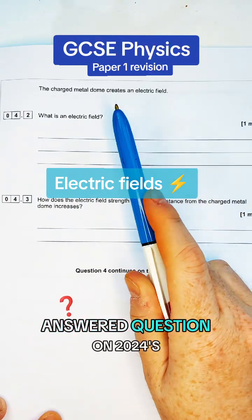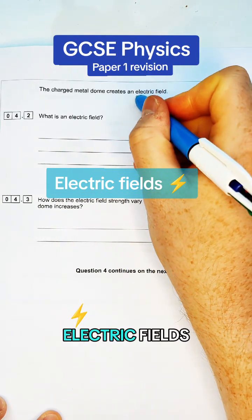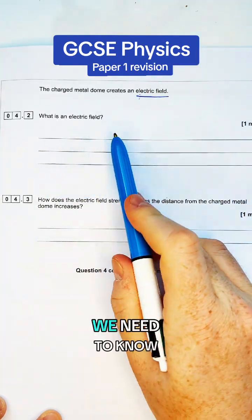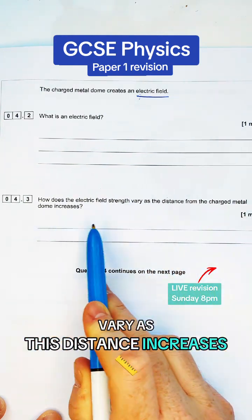This was the worst answer question on 2024's GCSE physics paper. It's all about electric fields. The key information we need to know is what is it and how does it vary as the distance increases.